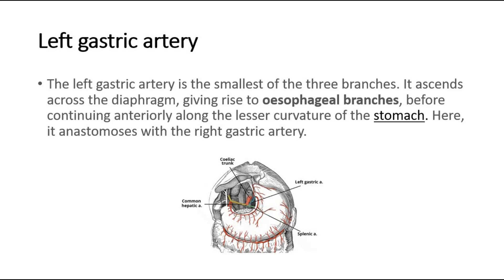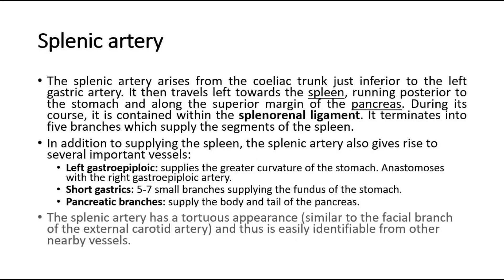Second, the splenic artery arises from the celiac trunk just inferior to the left gastric artery. It then travels left towards the spleen, running posterior to the stomach and along the superior margin of the pancreas. During its course, it is contained within the splenorenal ligament. It terminates into five branches which supply the segments of the spleen.